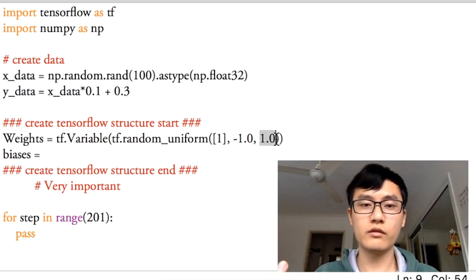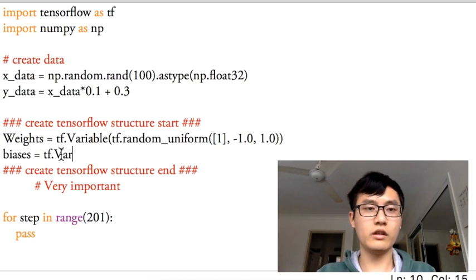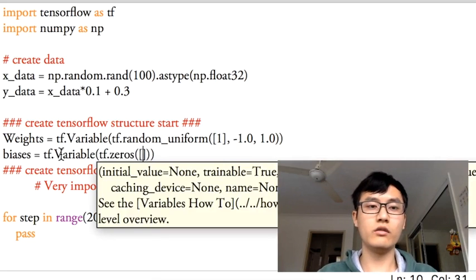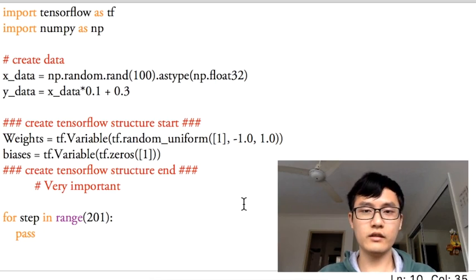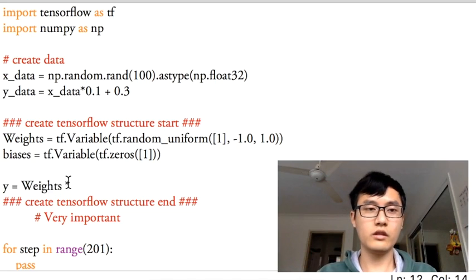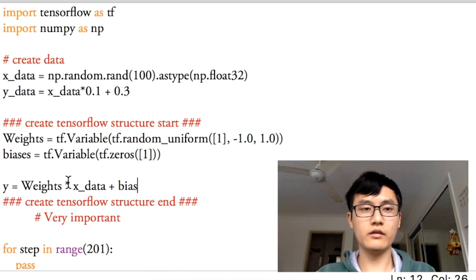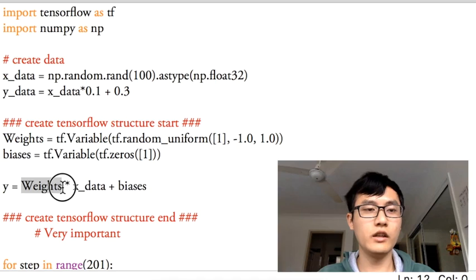For the bias, it is also tf.Variable initialized with tf.zeros of shape 1 — so it starts at zero. Once we have defined these two variables, we build the structure showing how weights and bias are calculated: the predicted Y equals weights times x_data plus bias.